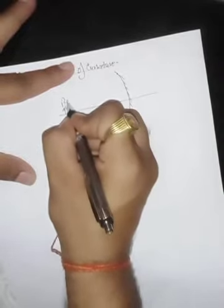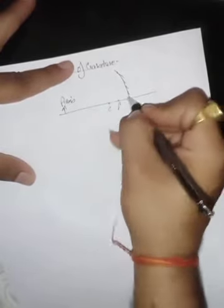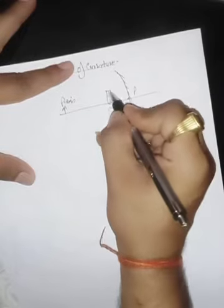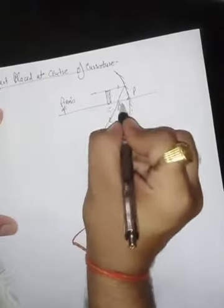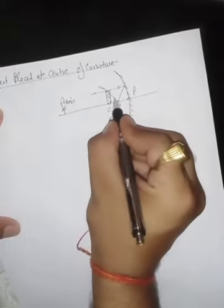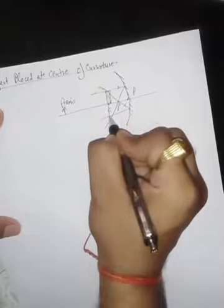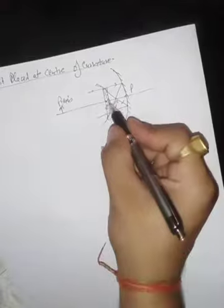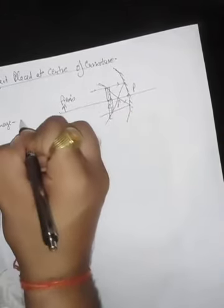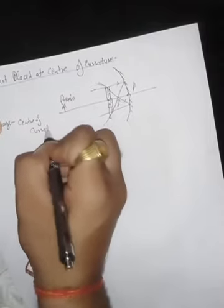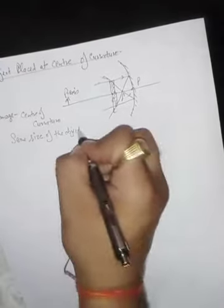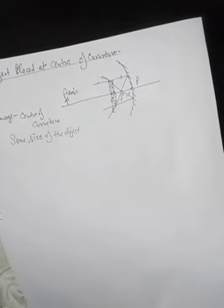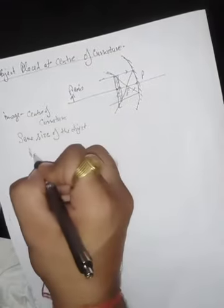Here is the mirror with principal axis, focus, center of curvature and pole. When the object is placed at the center of curvature, parallel rays from infinity go through the focus, and rays coming from the focus go parallel. Parallel rays cut at the center of curvature itself. So the image is formed at the center of curvature, same size as the object, and real and inverted.